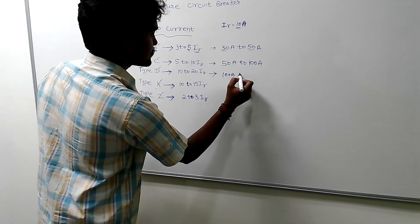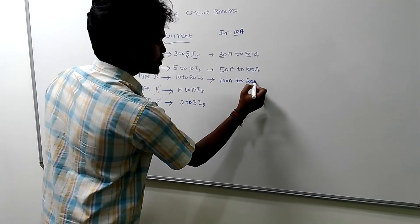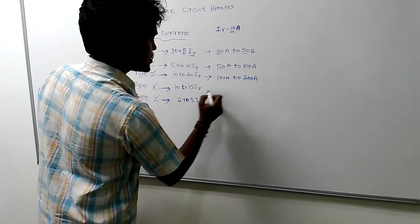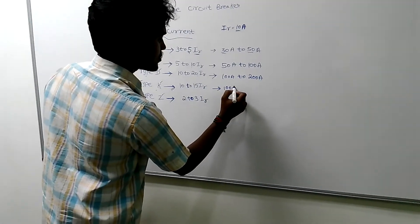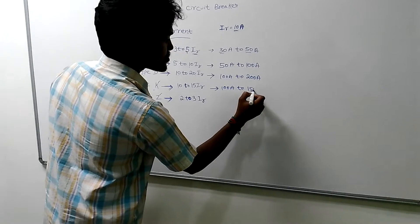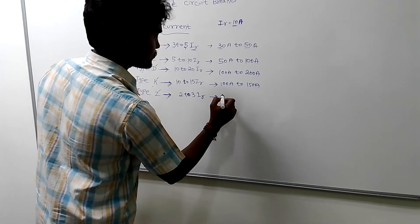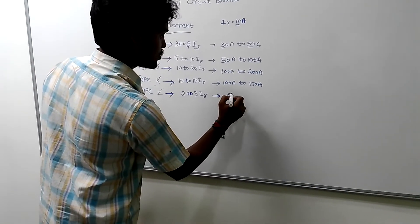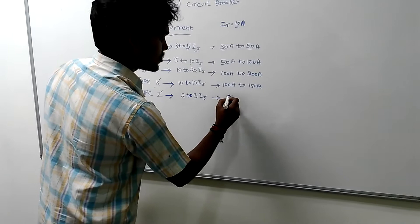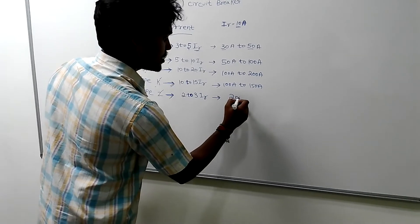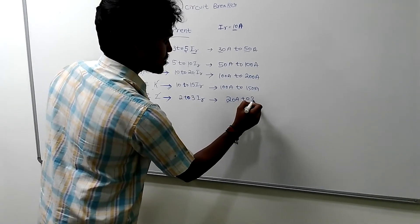Looking at the ranges on the diagram: this is the 100 amp range, this is the 150 amp range, and this is the 200 amp and 300 amp range.